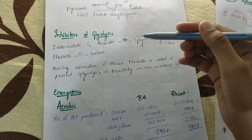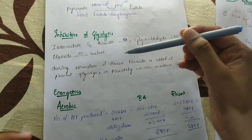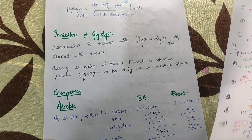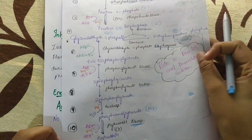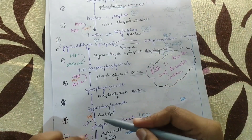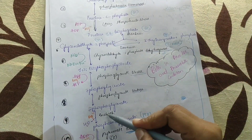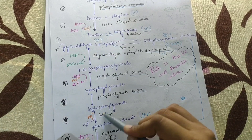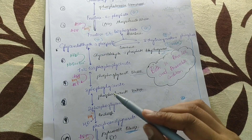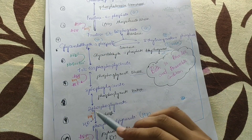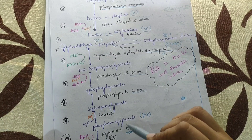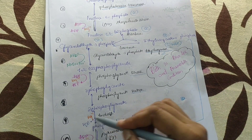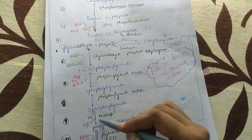These inhibitors may be asked in 3-mark questions. Another inhibitor is fluoride. Fluoride inhibits enolase — enolase is this enzyme here. So fluoride inhibiting enolase prevents the conversion of 2-phosphoglycerate to phosphoenolpyruvate (PEP), and glycolysis stops at this place.